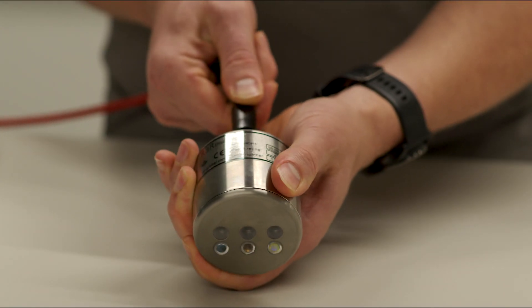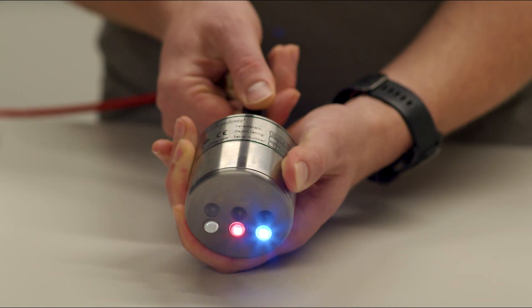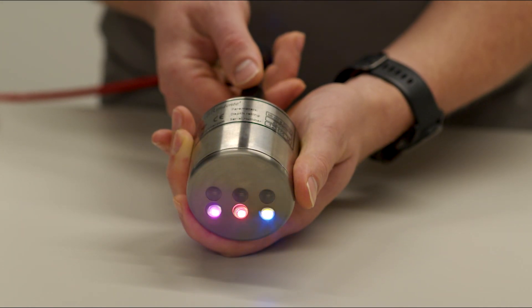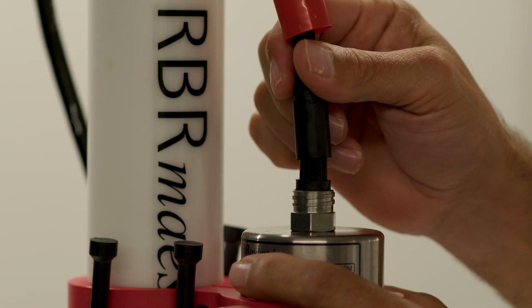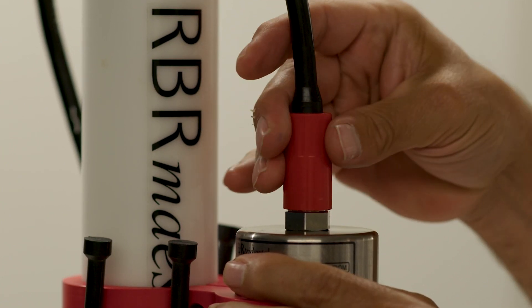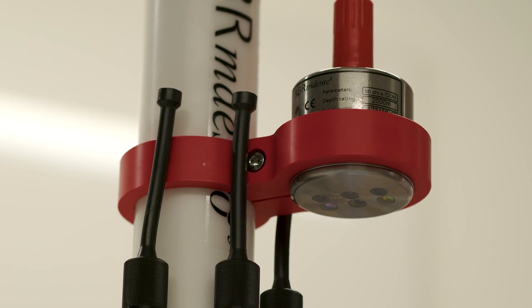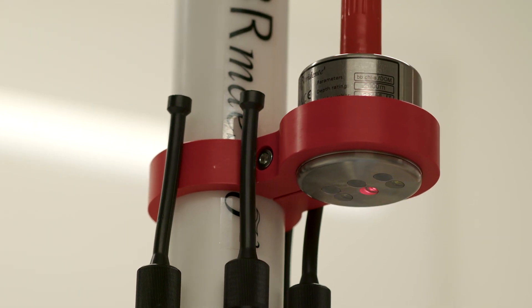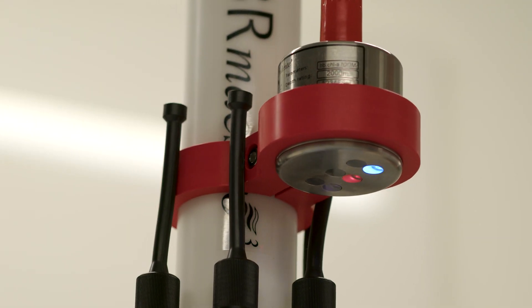When sampling continuously at rates up to 32 hertz, the RBR Tridente uses 384 milliwatts of power. Sampling infrequently at rates slower than 4 hertz, only 20 millijoules of energy are used per sample. This is an order of magnitude better than any other sensor on the market with an equivalent limit of detection.